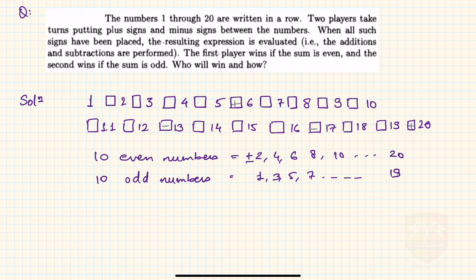So basically what will happen—there will be either a plus sign or a minus sign in front of all these digits. For example, when someone was placing a sign between 15 and 16, they have two choices: either put plus 16 or minus 16. So we can say that along with all the numbers present here, there will be either a plus sign or a minus sign.